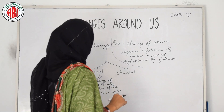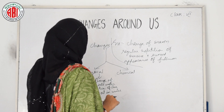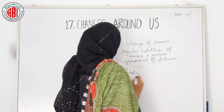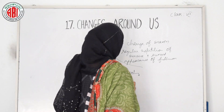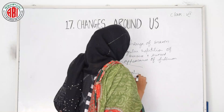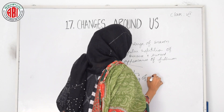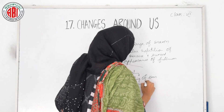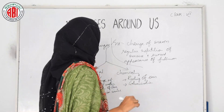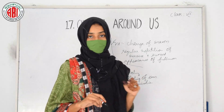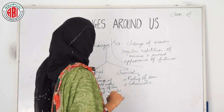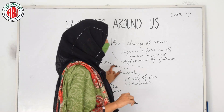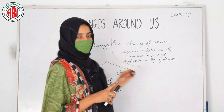Now let us take examples of chemical change. Here we can take rusting of iron — it's a chemical change. Another example is galvanization. In this chapter we are going to learn about different chemical changes in detail.